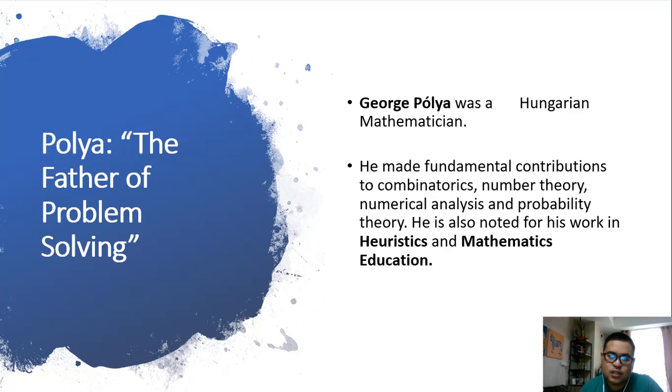He is George Polya. He was a Hungarian mathematician. He made fundamental contributions to combinatorics, number theory, numerical analysis, and probability theory. He is also noted for his work in heuristics and mathematics education.